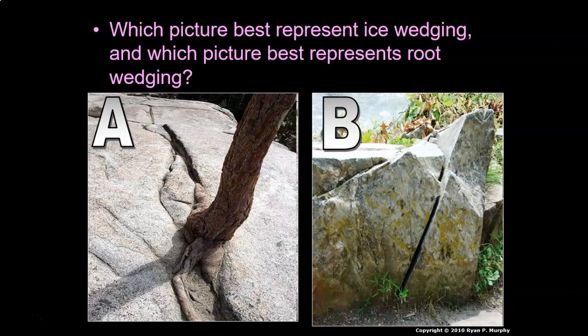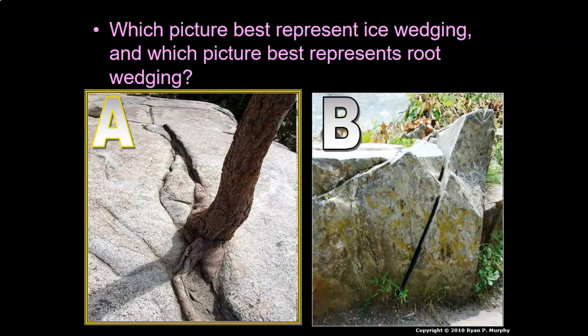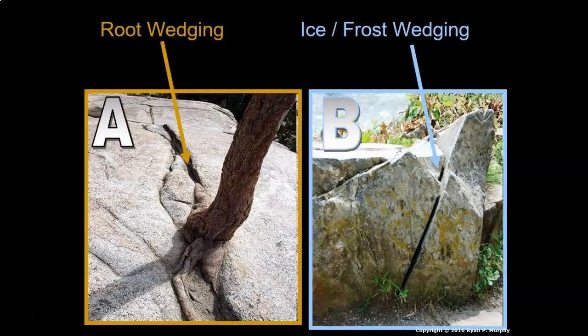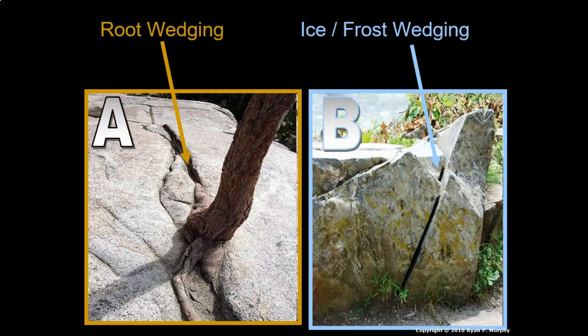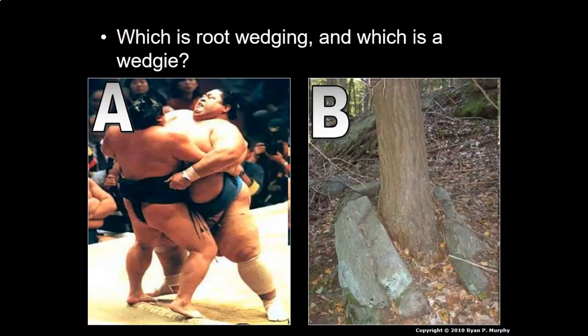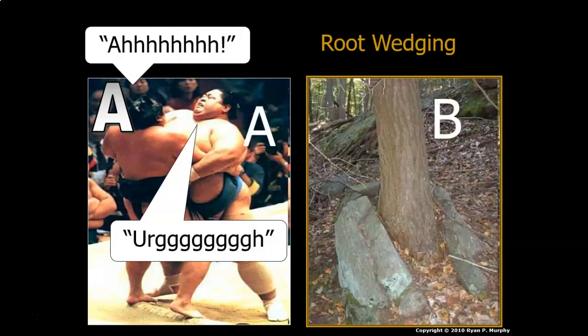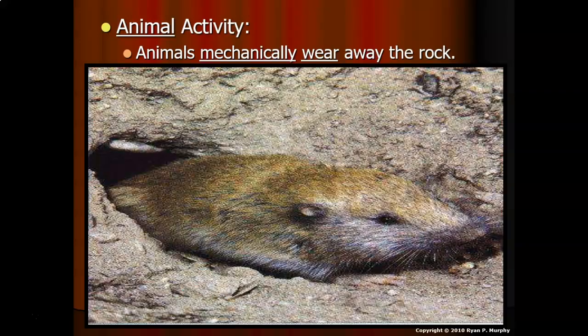Here's a quiz: which picture best represents ice wedging and which best represents root wedging? Letter A is root wedging and letter B is ice or frost wedging. And here's another one — which is root wedging and which is just a wedgie? B is root wedging, and A is sumo wrestlers — that would be the wedgie.